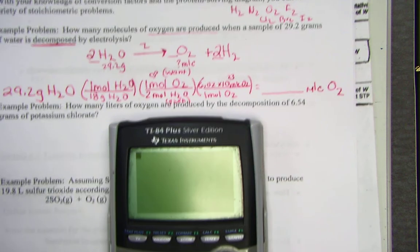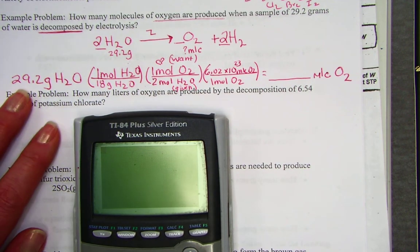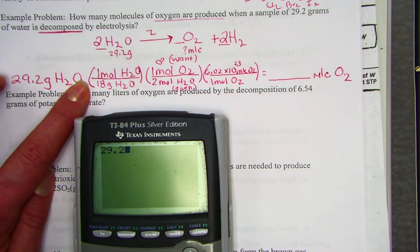Please grab your calculator and follow the key sequence with me. Hit 29.2, our given mass. In the first conversion parenthesis, it's showing us divide by 18. 18 is on the bottom, so we divide.